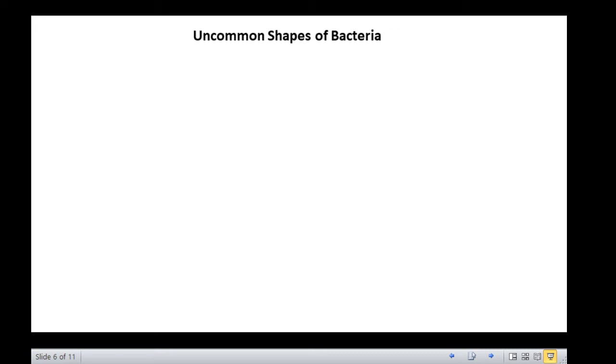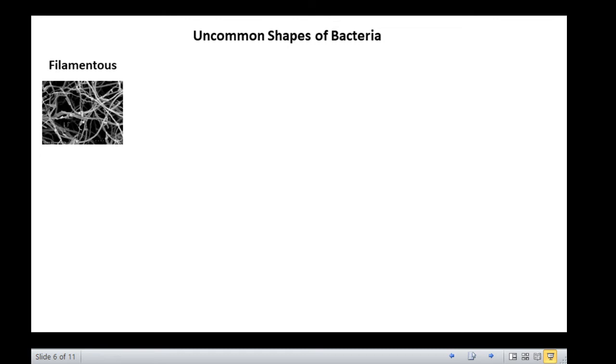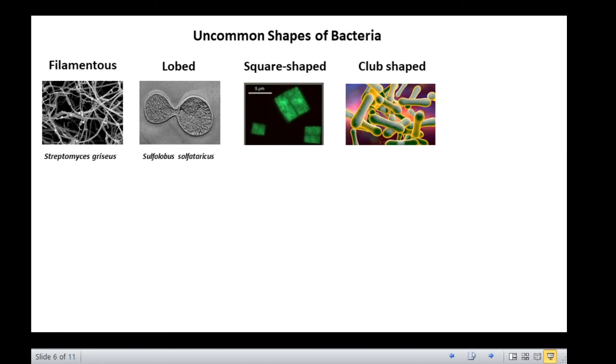Apart from the common shapes that we saw in the last slide, bacteria show a variety of other shapes which are not very common. Some bacteria are filamentous, as exhibited by actinobacteria, example Streptomyces griseus. Some are lobed, an example of which is Sulfolobus solfataricus. Further, bacteria can be square-shaped, club-shaped, star-shaped as can be seen here. The examples of these forms are Haloarcula walsbyi, Corynebacterium diphtheriae, and Stella vacuolata.